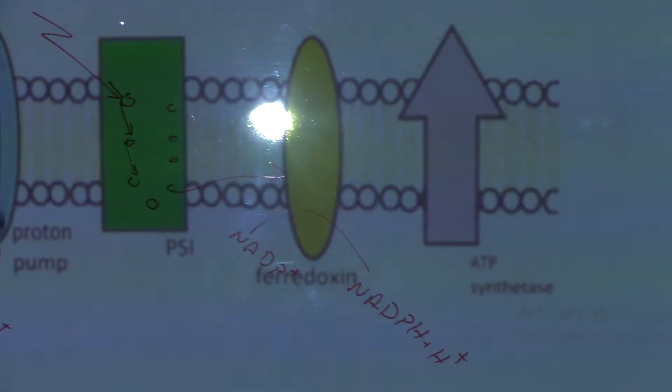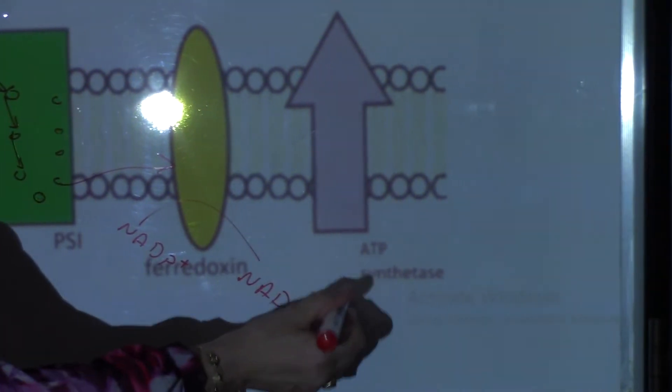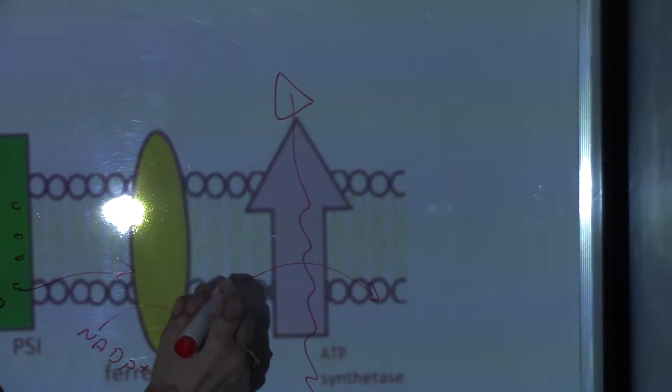When the proton concentration increases, the hydrogen ions pass through the ATP synthase passively, generating ATP. ATP synthase uses ADP and Pi to generate ATP here. We also take the diagram to show where photolysis happens.